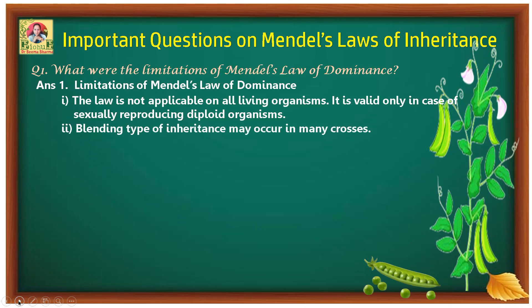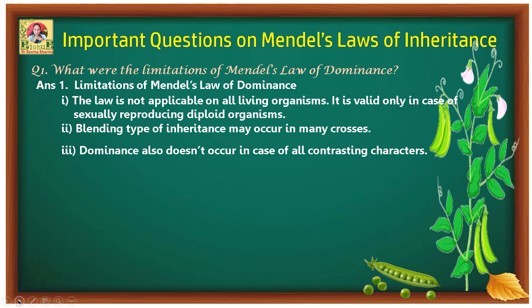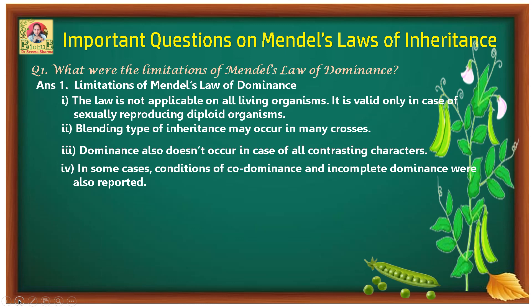Second limitation: blending type of inheritance may occur in some crosses, and this law cannot explain that. Third, dominance also does not occur in case of all contrasting characters. Fourth, in some cases conditions of co-dominance and incomplete dominance were also reported, which cannot be justified with the help of the law of dominance.